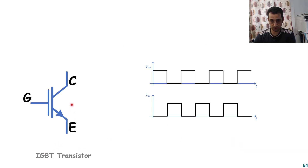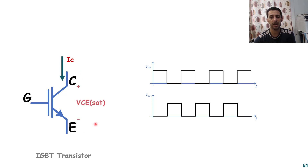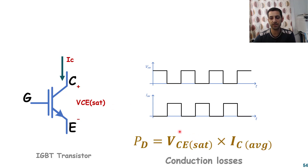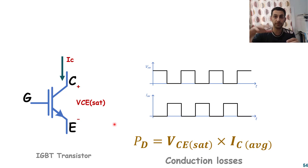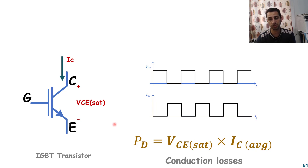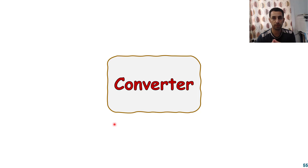For IGBT transistors, the approach is very similar to the BJT. Current flows from collector to emitter when on, and a saturation voltage VCE(sat) is obtained from the datasheet. The conduction loss is therefore IC(average) × VCE(sat). To summarize: for diodes and BJTs/IGBTs we use the average current; for MOSFETs with their resistive channel we use the RMS current squared times RDS(on).